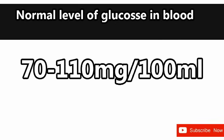Normal level of glucose in the blood — Answer: 70 to 110 mg per 100 ml. Level of glucose in blood is maintained by the hormones secreted by pancreas.